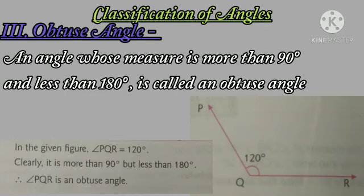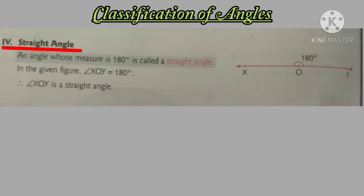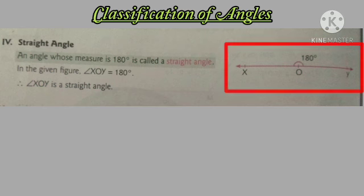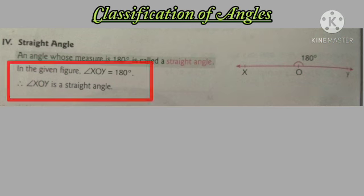Next, straight angle. An angle whose measure is 180 degrees is called a straight angle. This angle measures 180 degrees. It's a straight angle. Angle XOY is having 180 degree measurement, so it's a straight angle.